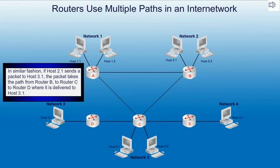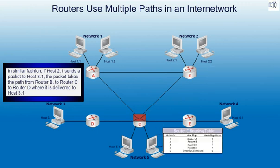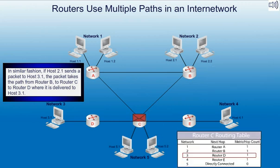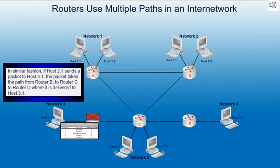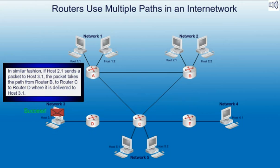In similar fashion, if host 2.1 sends a packet to host 3.1, the packet takes the path from router B to router C to router D, where it is delivered to host 3.1.